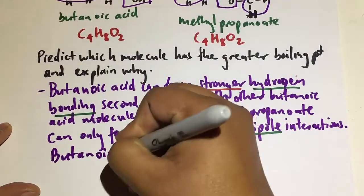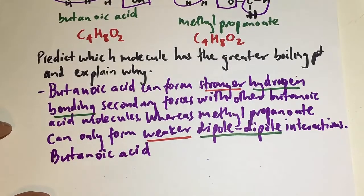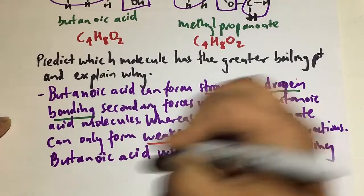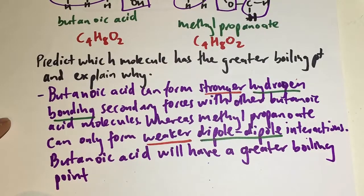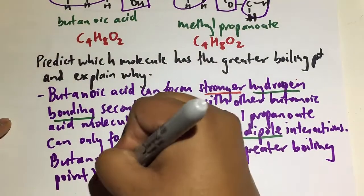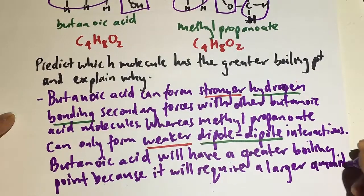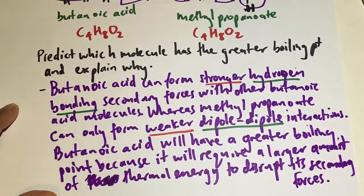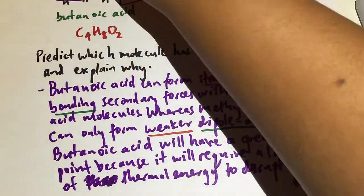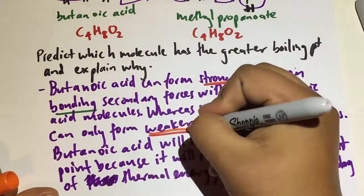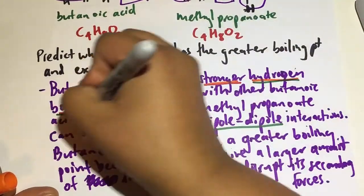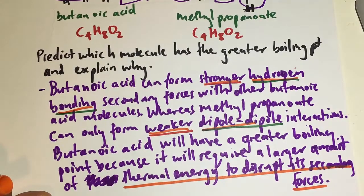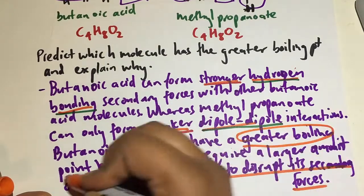Butanoic acid will have a greater boiling point because it will require a larger amount of thermal energy to disrupt its secondary forces. The key points in a response are: mention the strength of the secondary forces, state what those secondary forces are, and state which molecule needs the higher amount of thermal energy to disrupt its secondary forces and therefore has the greater boiling point.